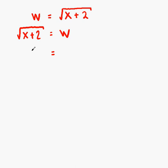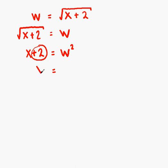On this side we have the square root of x plus 2. If we were to square this, the square root sign would disappear and we would just be left with x plus 2. If we square the left-hand side, we must also square the right-hand side, so the square of w is w squared. Now we have x plus 2 equals w squared. We need to move the plus 2 — change side, change sign — so it becomes minus 2. Our final answer is x equals w squared minus 2.